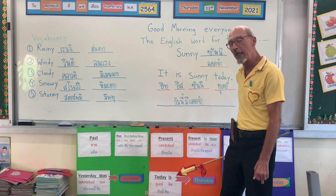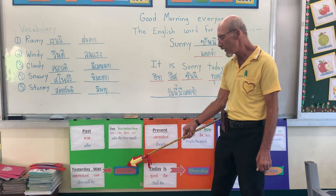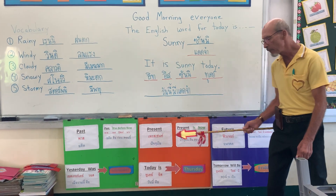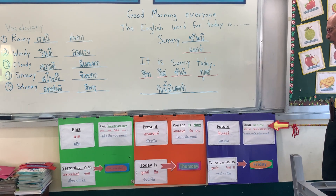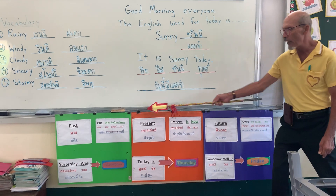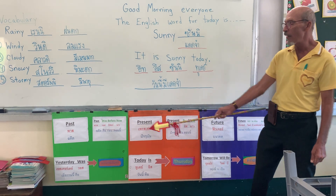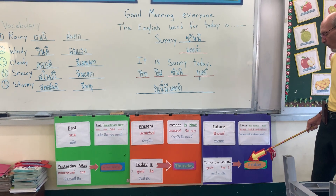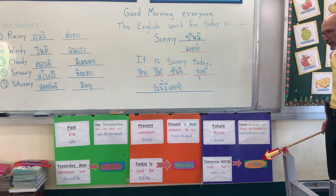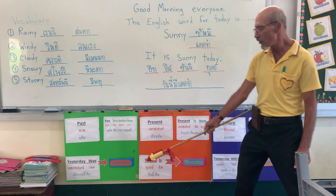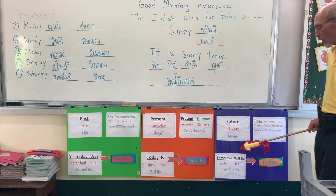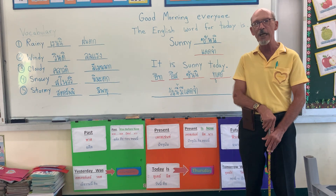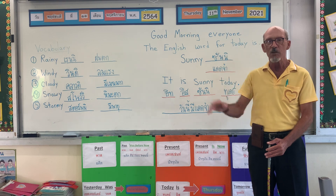Yesterday was what day? Wednesday — yesterday was Wednesday. And future will be after now. Tomorrow will be what day? What comes after Thursday? Friday! So: today is Thursday, yesterday was Wednesday, tomorrow will be Friday. That's part one of our Let's Go lesson, Thursday 11 November 2021. See you later, part two coming up!